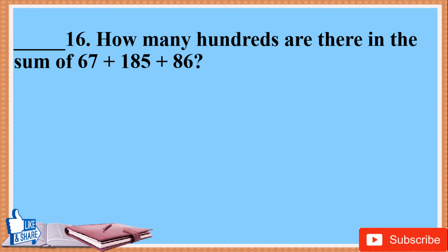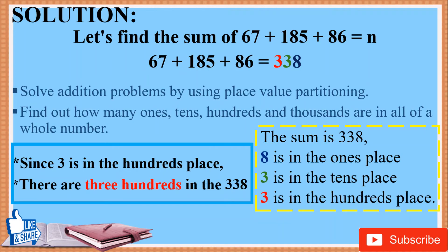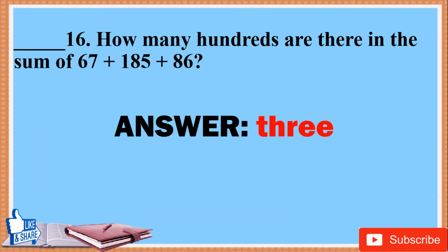16. How many hundreds are there in the sum of 67 plus 185 plus 86? Solution: 67 + 185 + 86 = 338. Using place value: 8 is in the ones place, 3 is in the tens place, and 3 is in the hundreds place. Since 3 is in the hundreds place, there are three hundreds in 338. Answer: 3.